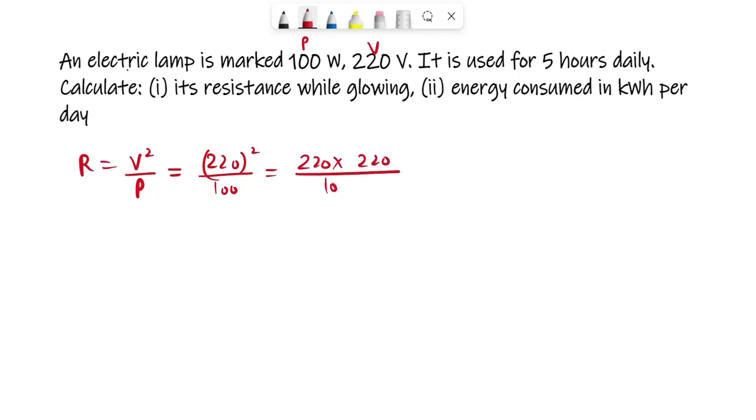So you will cancel two zeros and you are just left with 22 into 22, which is nothing but 484 ohm. So you get the resistance as 484 ohm.